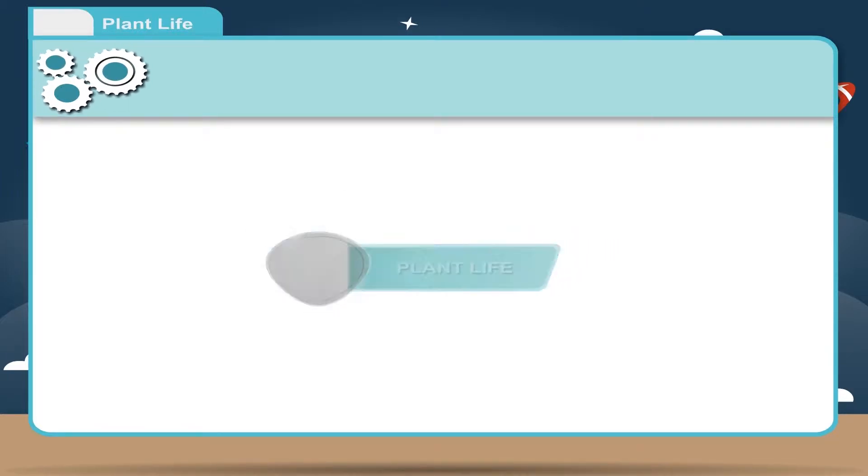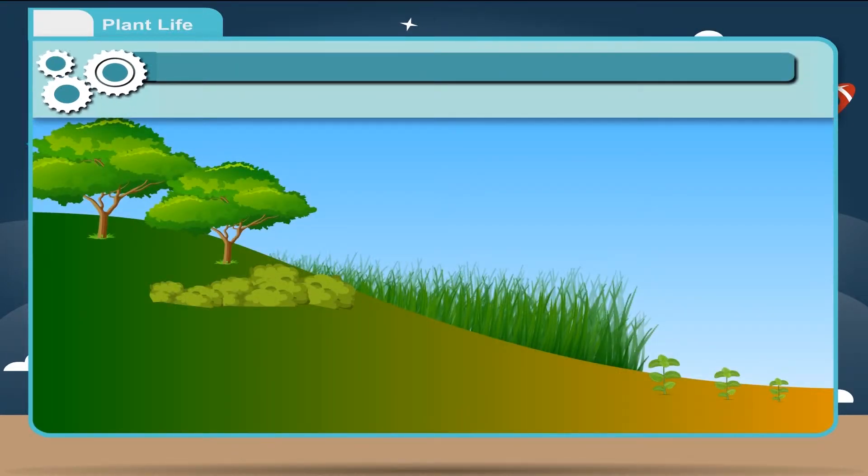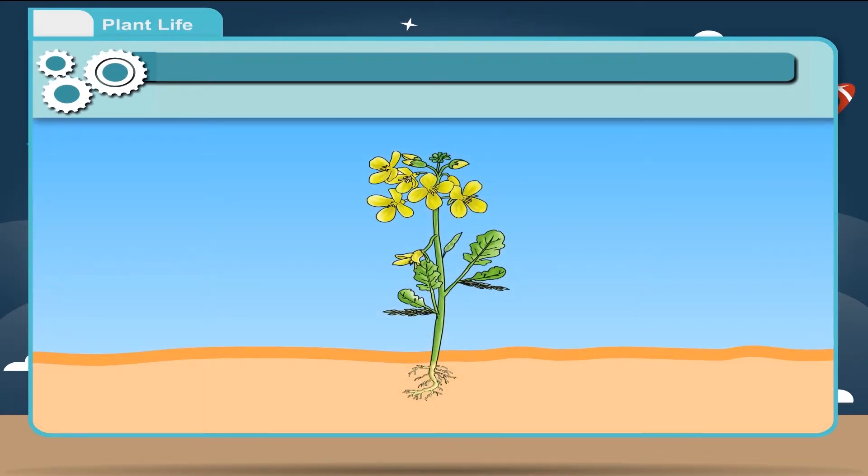Plant Life. In our surroundings, we have number of plants and trees. They may differ in shape and size, but all the flowering plants have some common characteristics. Basically, all the flowering plants are similar because all plants possess root, stem, leaf, flower and fruit.